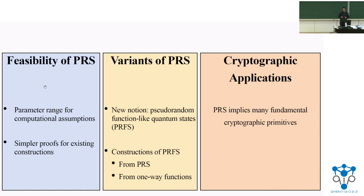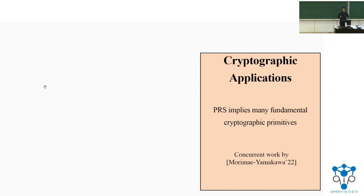In terms of applications, we show that many interesting primitives implied by one-way functions can be constructed from pseudorandom quantum states. I should also mention a very nice concurrent work by Morimae and Yamakawa, who also explore the applications of PRS to cryptography.